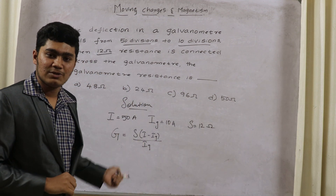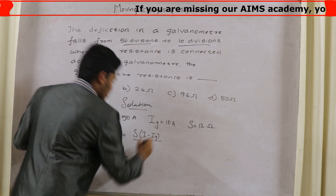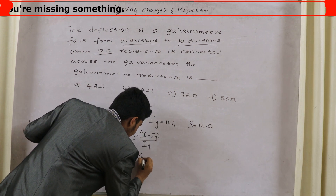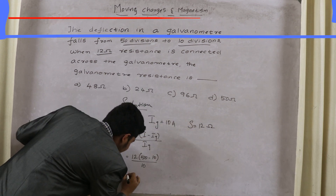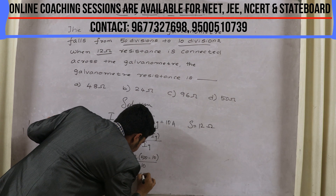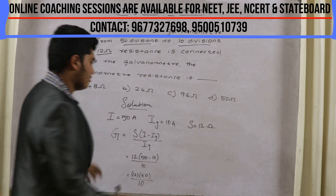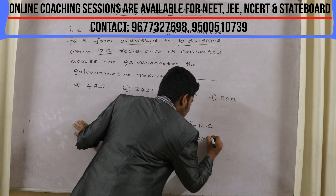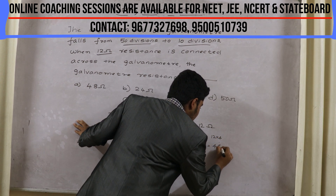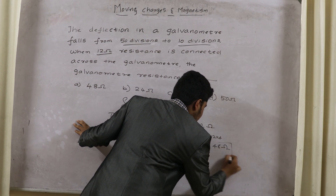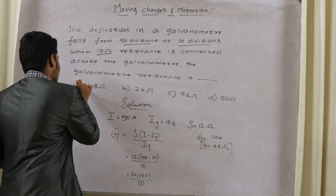If we substitute and simplify, we can get the answer in three seconds. Substitute S = 12, into (50 minus 10) by 10. 50 minus 10 is 40, divided by 10 gives 4. So G is equal to 12 into 4, which is 48 ohms. G is equal to 48 ohms. Option A is 48 ohms, so the answer is Option A.